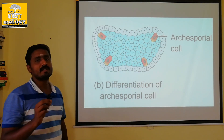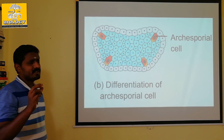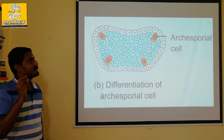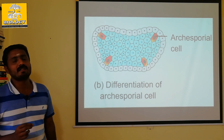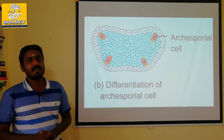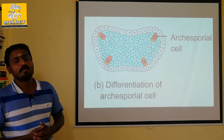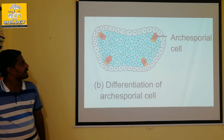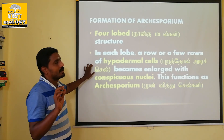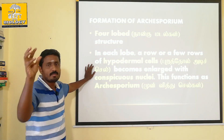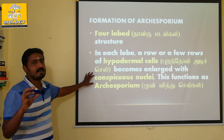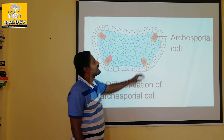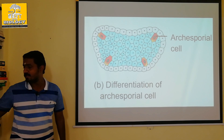The cells develop a conspicuous nucleus, and these are the archesporium cells. The archesporium undergoes division to produce wall layers, pollen grains, and sporogenous cells. The archesporium cells are represented in the diagram in blue color.